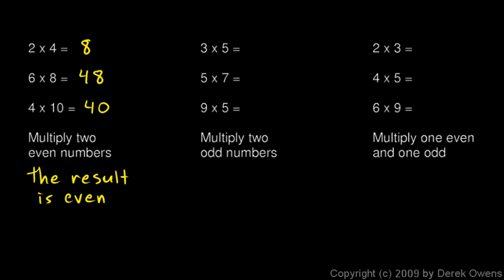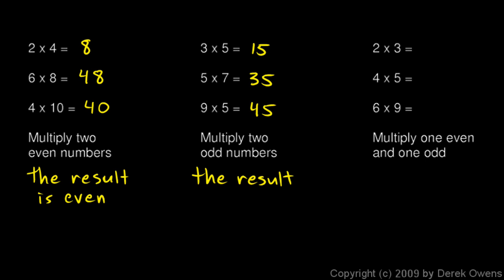That's true every single time. Now look here: 3 times 5 — two odd numbers multiplied together. 3 times 5 is 15, 5 times 7 is 35, 9 times 5 is 45. This pattern is always true: multiply two odd numbers and the result is odd, every single time.